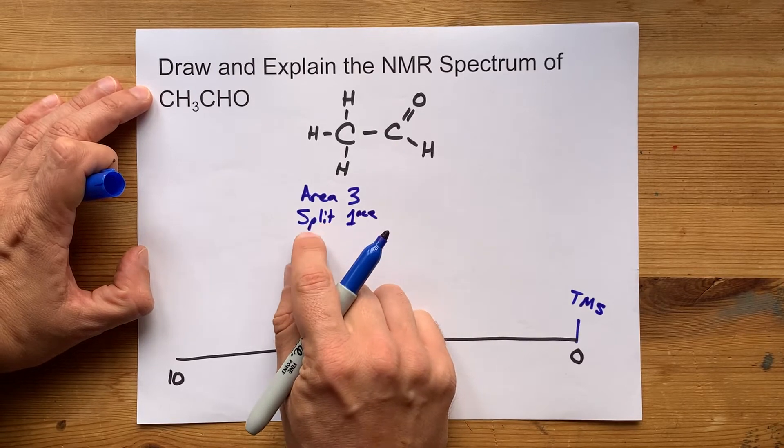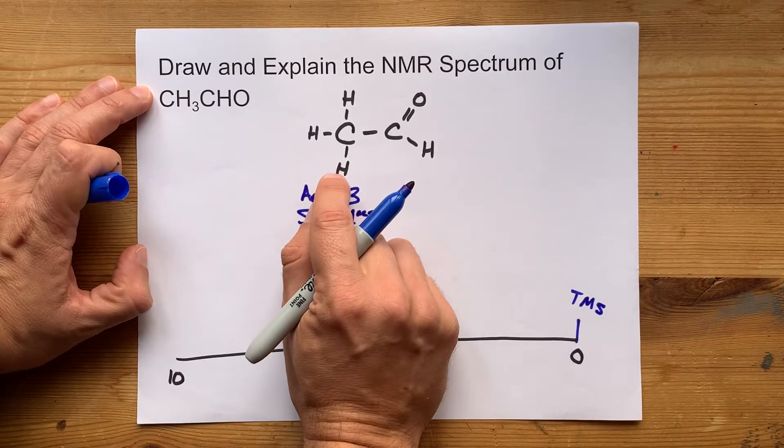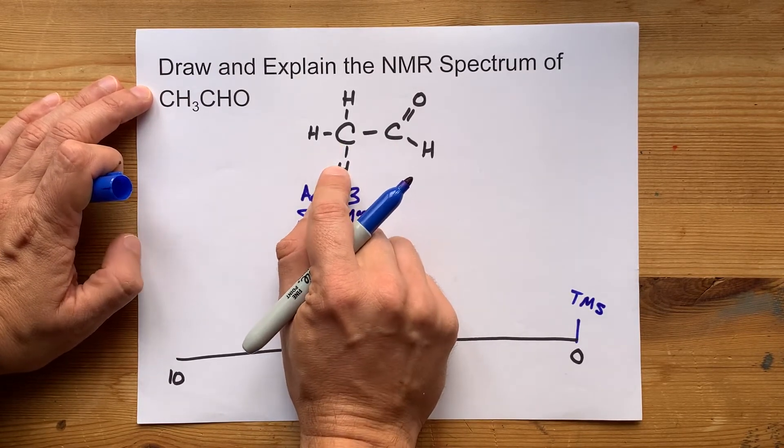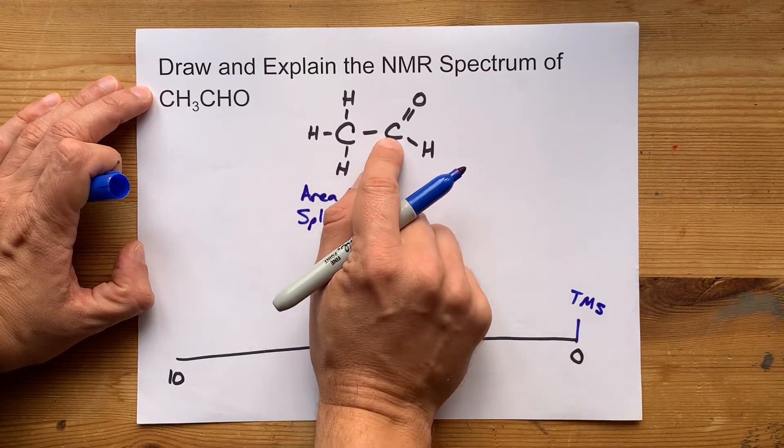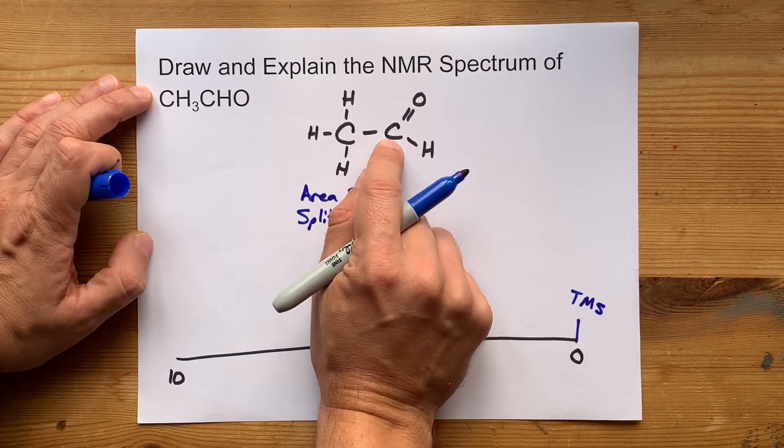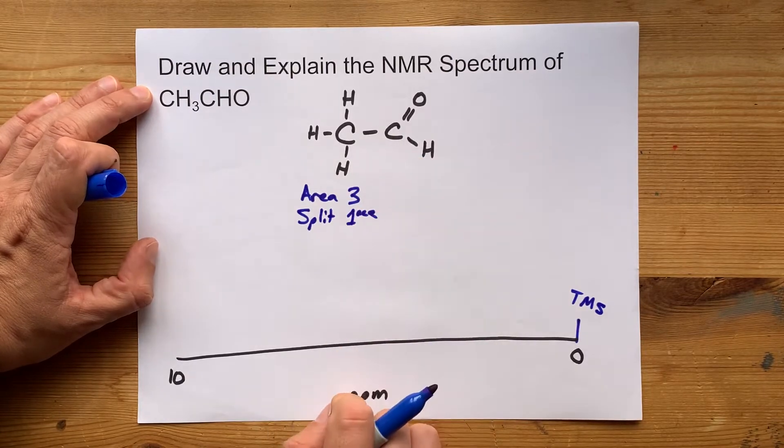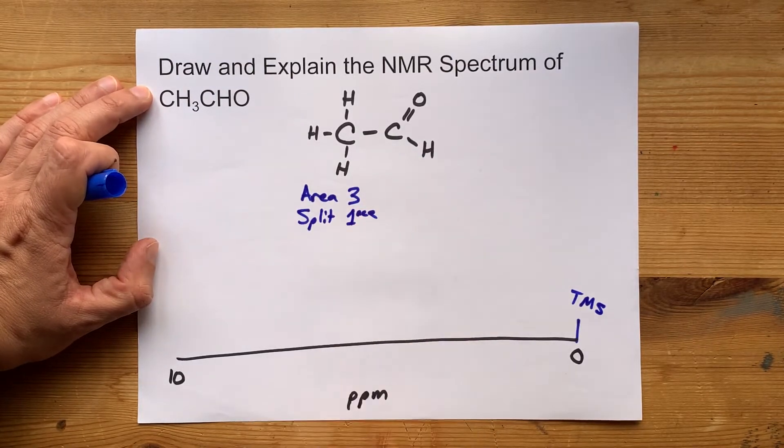So in order to figure out how many times it's split, remember, you're taking a look at the carbon that the hydrogens are attached to, looking at the carbons next to those and asking how many hydrogens is that attached to. It is split a single time here.